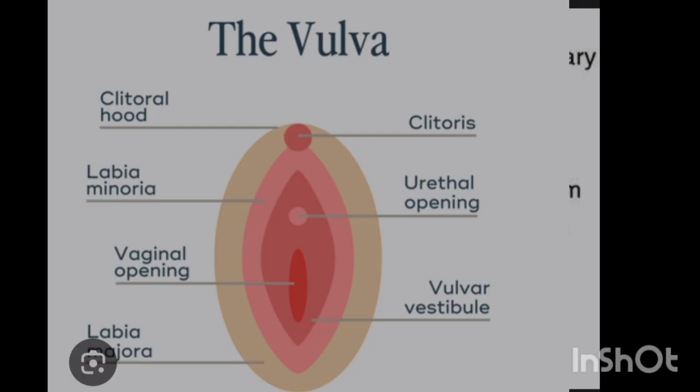After labia majora, going inward, we reach the labia minora. 'Labia' means lips, 'minora' means small, so it is just small lips inside the vagina. It consists of vestibular glands, formerly known as Bartholin's glands. These Bartholin's glands produce a lubricating fluid which keeps the vulva smooth and lubricated.